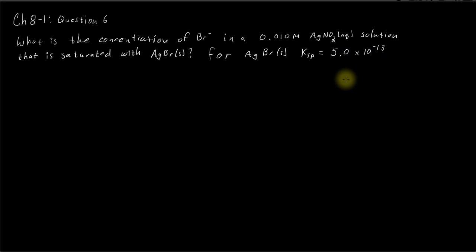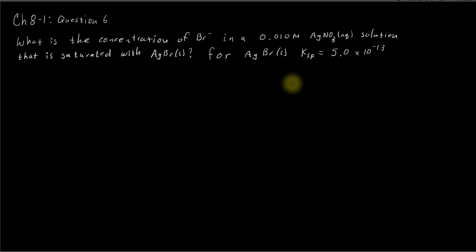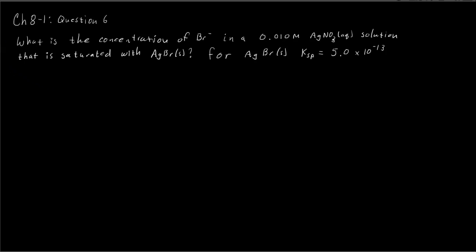We're going to work this problem. This is what I call a common ion effect problem, and it's looking at solubility. We have the Ksp equilibrium constant here. What's different about this problem is that we're going to work it using activities and activity coefficients, which may give us a different answer than if we ignored those ionic strength effects. Let's draw a quick picture of what's going on in the beaker to get an idea of how to work this problem and remind ourselves about common ion effect problems.